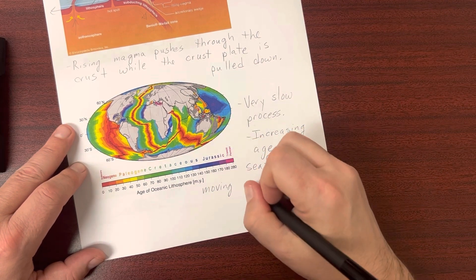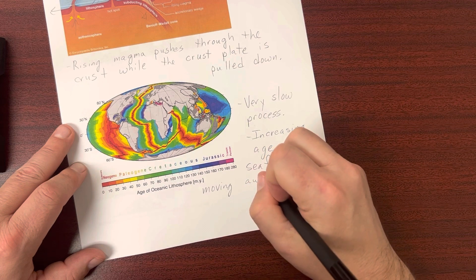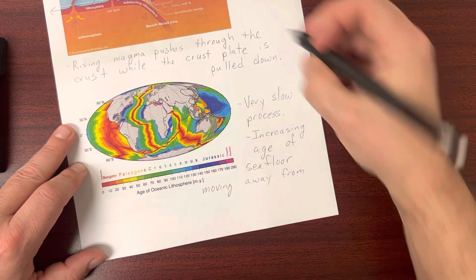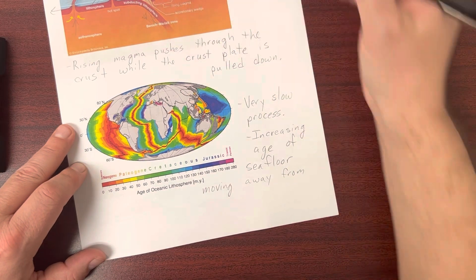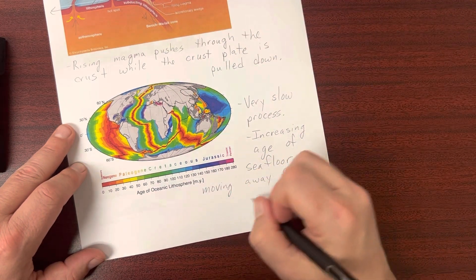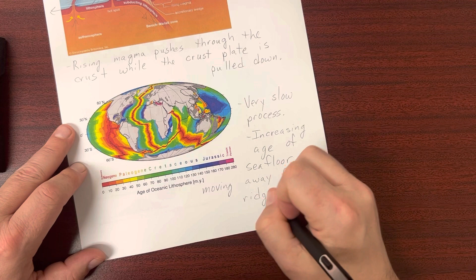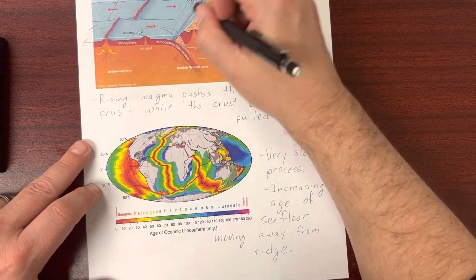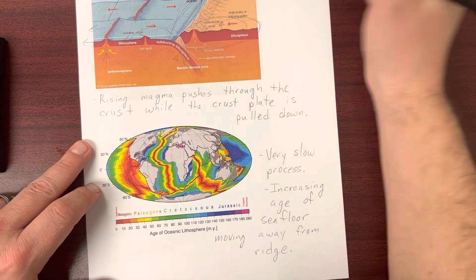And the oldest rock is the rock that's furthest away from that ridge before it gets taken back down into the earth here. So our oldest rock is right along this edge of where the ocean meets the continent.